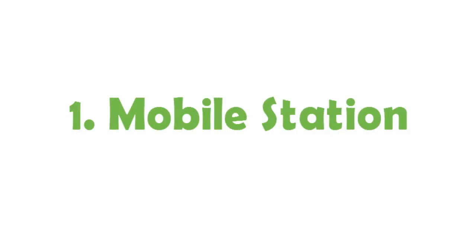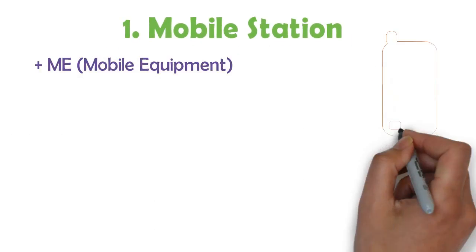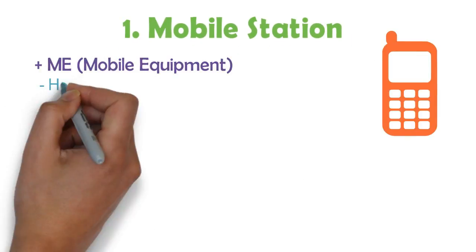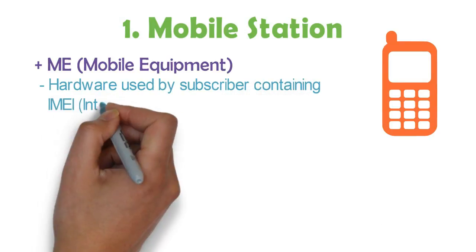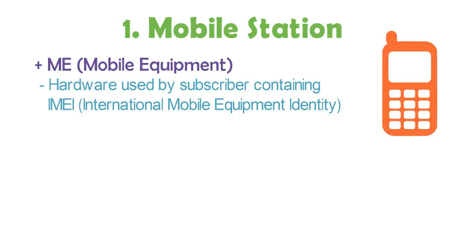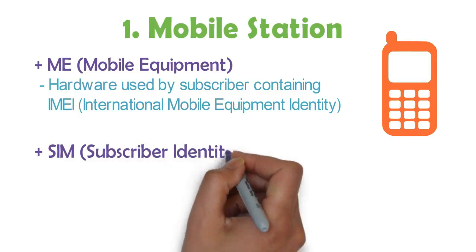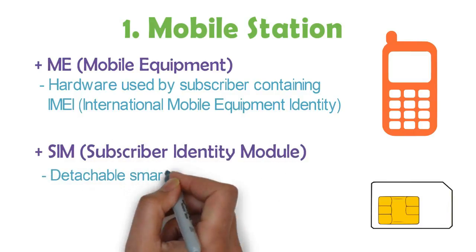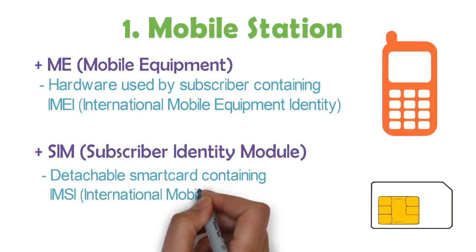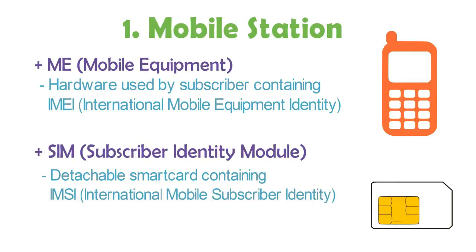First of all is the Mobile Station. It has two components. Mobile Equipment — the hardware used by a subscriber to access the network, identified by the IMEI number (International Mobile Equipment Identity). SIM — Subscriber Identity Module — is a detachable smart card containing the IMSI number (International Mobile Subscriber Identity). It also allows the user to send and receive calls.